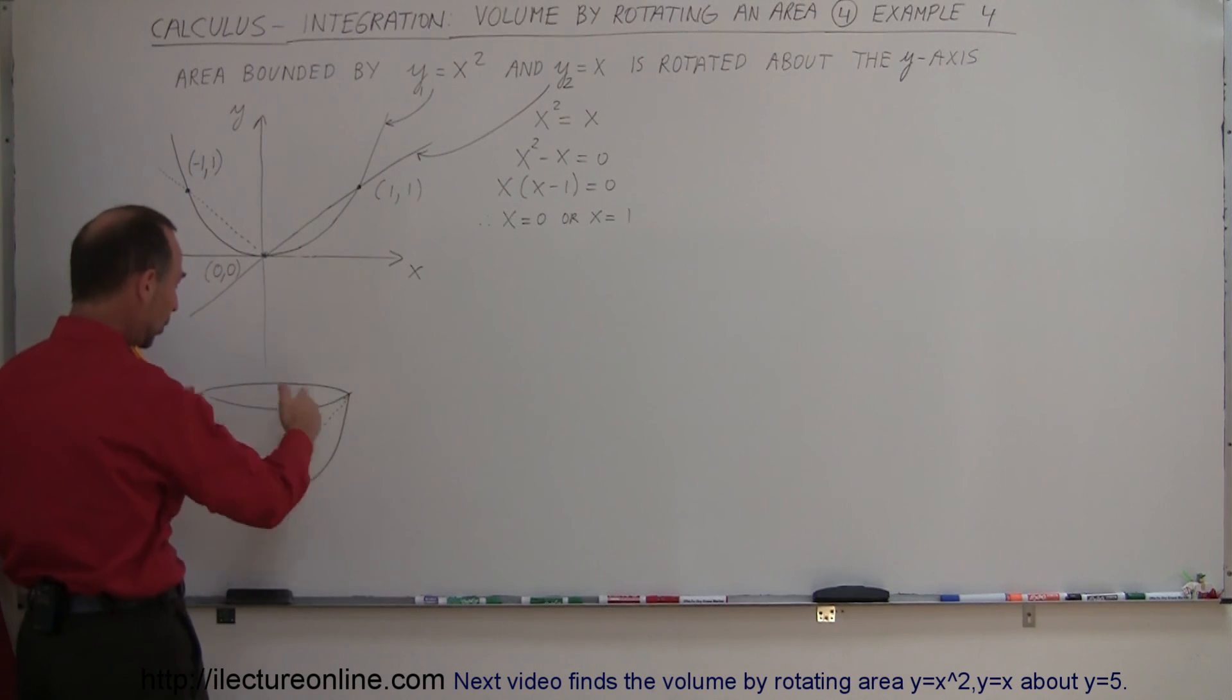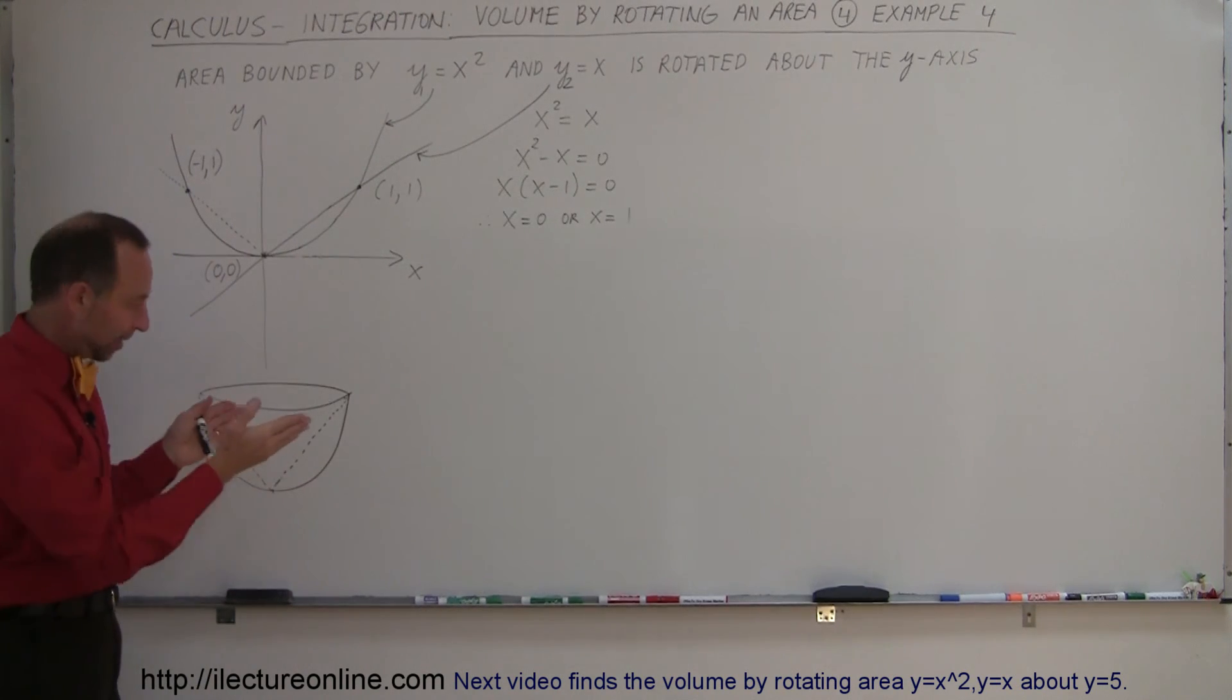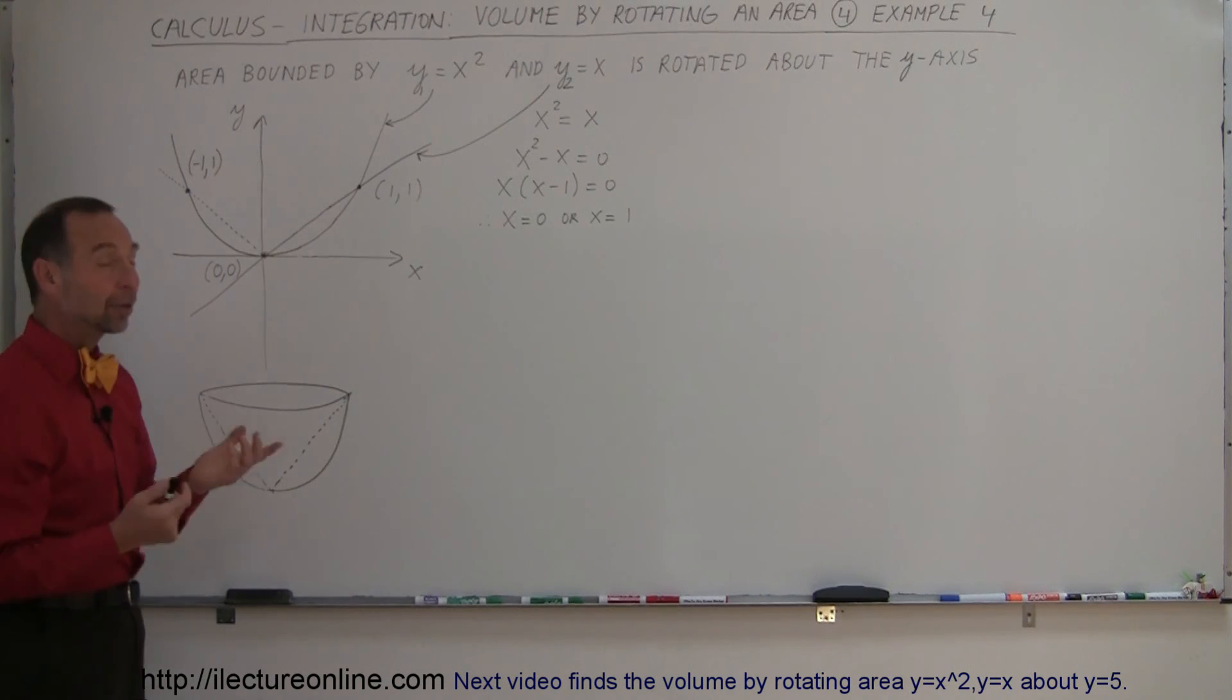So you get kind of a parabolic bowl with straight sides on the inside but all the way around like that. It's kind of a strange looking bowl, but hey it would work I suppose. And we're trying to find the volume of that. So how do we do that?